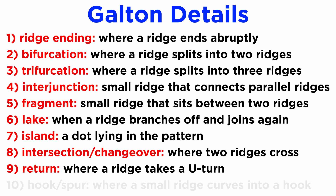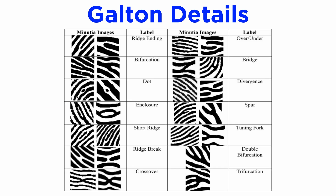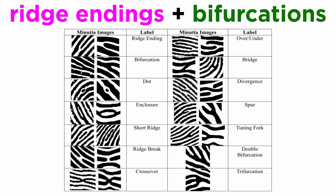9. Return — this detail consists of a ridge abruptly changing its path and taking a U-turn. And 10. Hook — also known as a spur, this detail is observed where a small ridge curves into a hook-like shape. The ridge characteristics on a fingerprint impression can be denoted by these names. One thing to note is that each of these details can be classified primarily as either a ridge ending or a bifurcation.